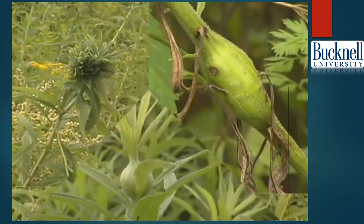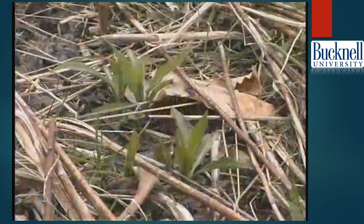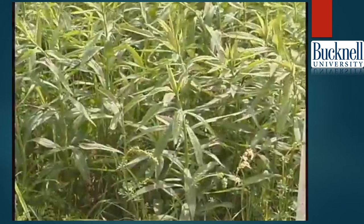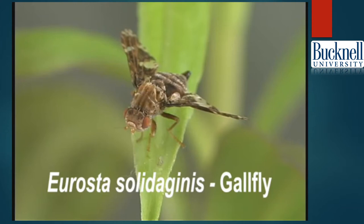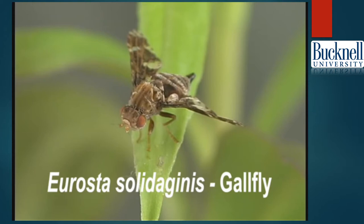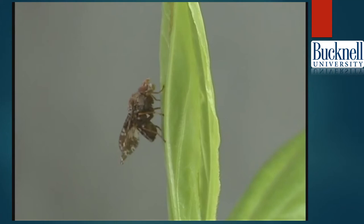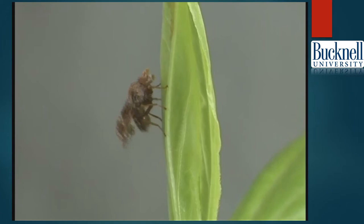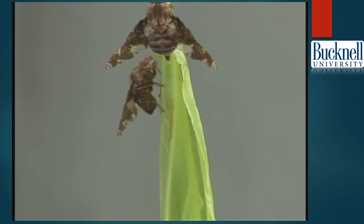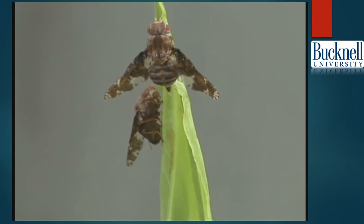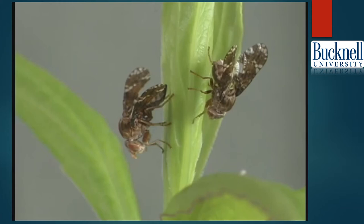In early spring, stems of tall goldenrod begin to emerge from the ground. Young stems are well established by May, when they are discovered by male and female gall flies of the species Eurosta solidaginus, commonly referred to as the goldenrod ball gall fly, or simply the gall fly. About the size of a small house fly, the gall fly itself typically goes unnoticed. A newly emerged male searches out young stems of tall goldenrod, then courts females with flicks of his wings and side-to-side bobbing of his body.